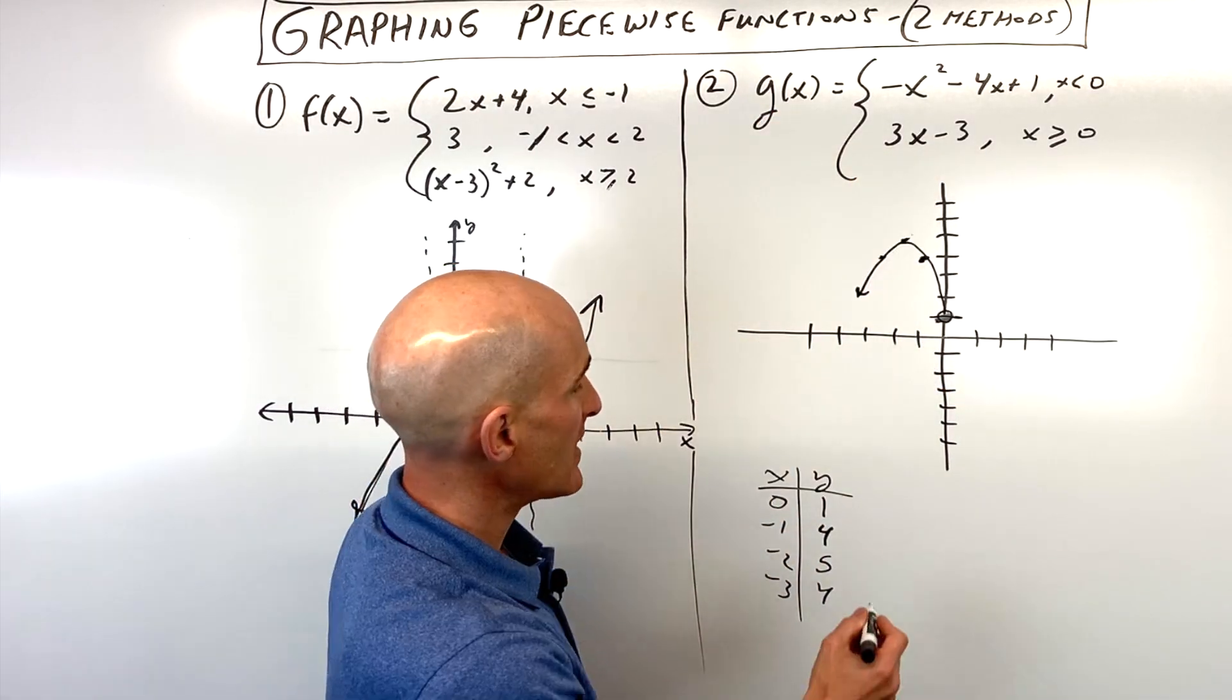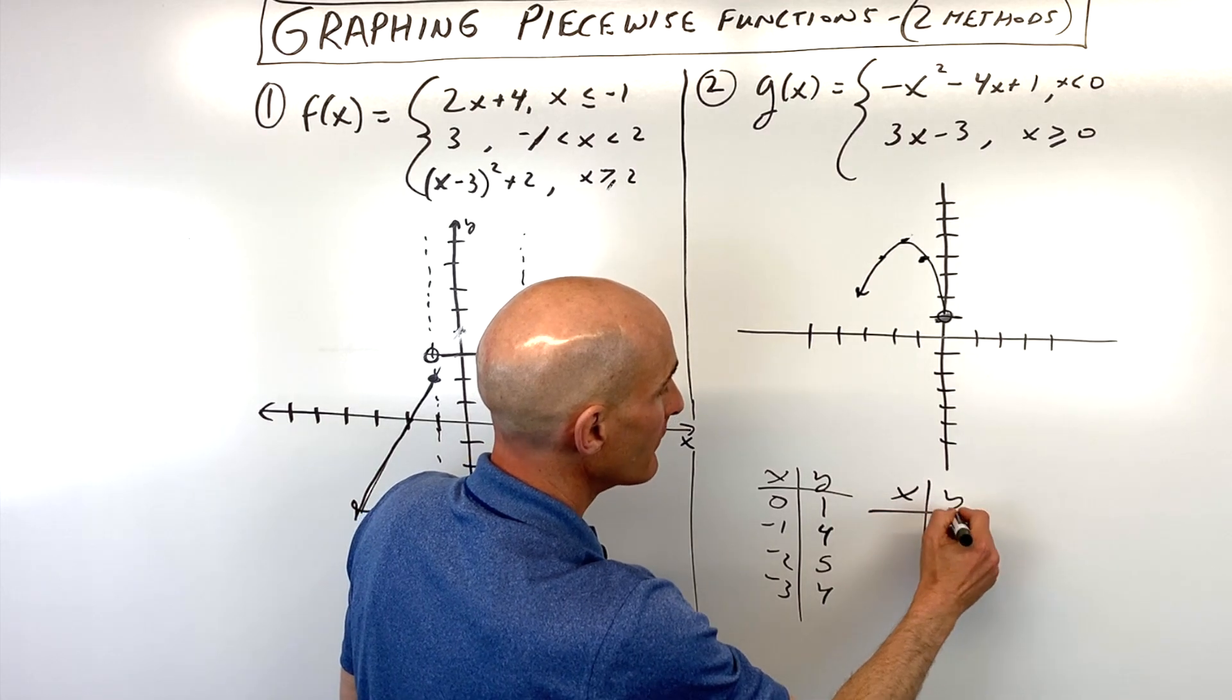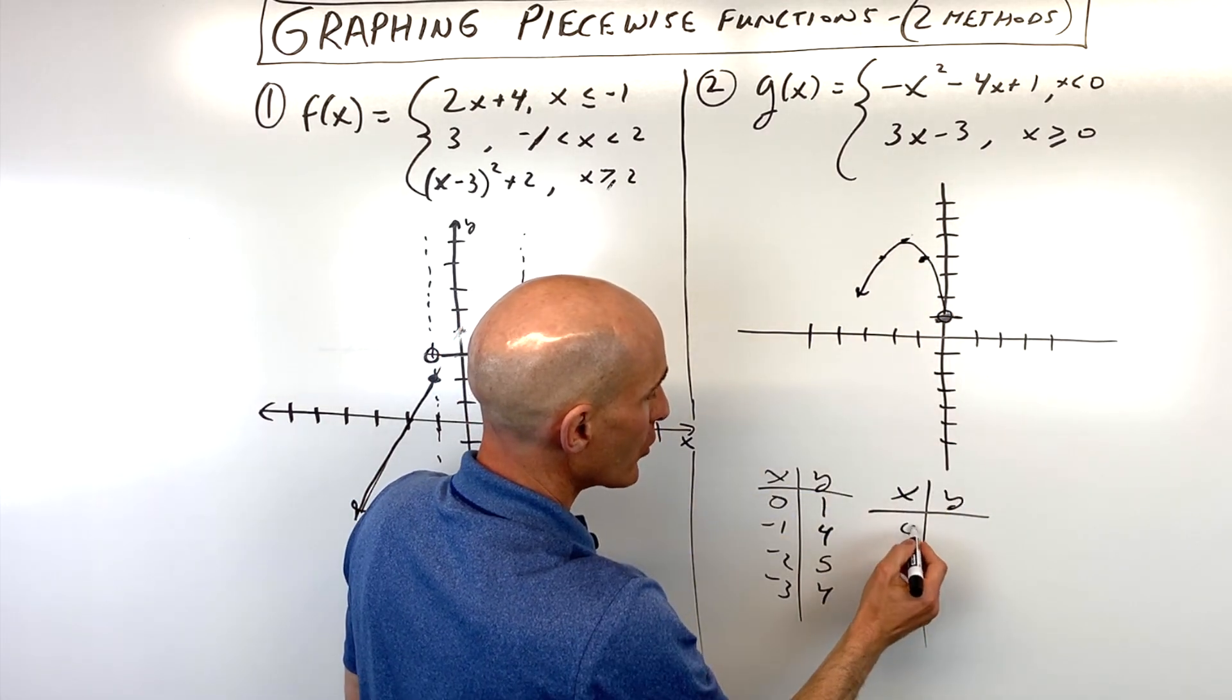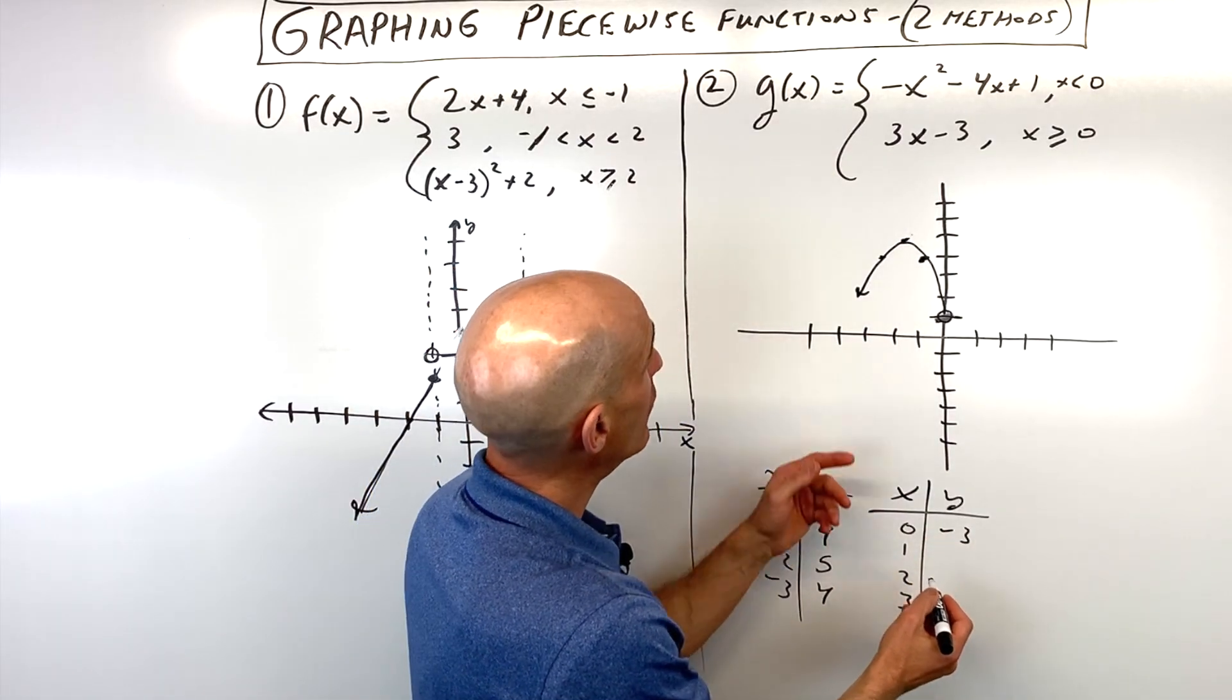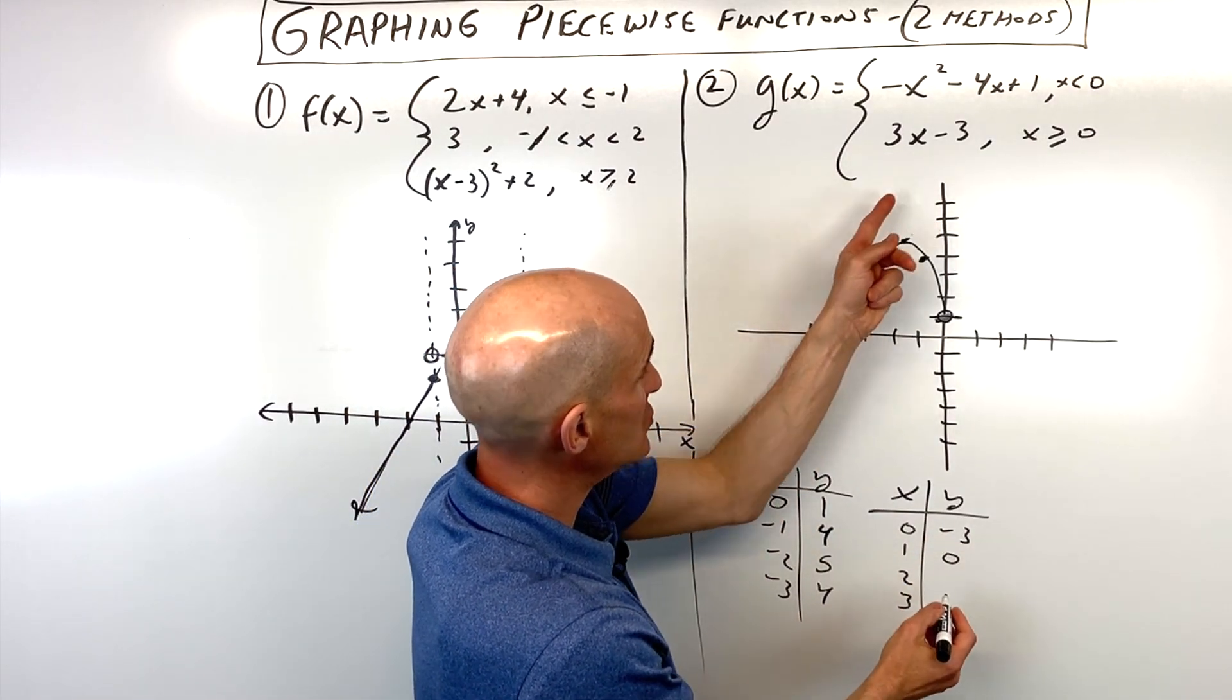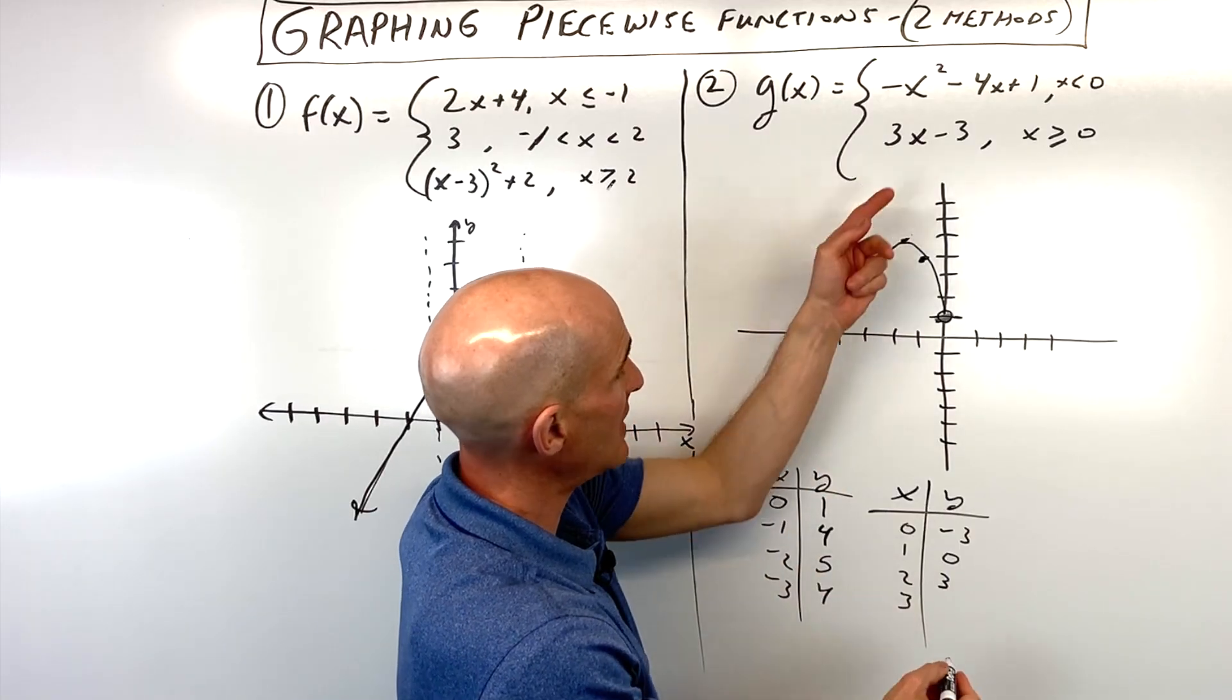Now for the second part, y equals 3x minus 3, we're also going to make a table, but we're going to pick values that are 0 or greater. So I'm just going to put 0, 1, 2, 3. If I put 0 in, I get negative 3. If I put 1 in, I get 0. If I put 2 in, I get 3. If I put 3 in, I get 6.